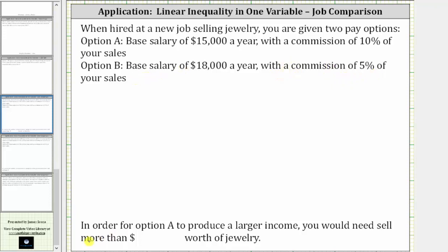We want to determine, in order for option A to produce a larger income, you would need to sell more than how many dollars worth of jewelry. Let's begin by letting x equal the amount of sales in dollars.